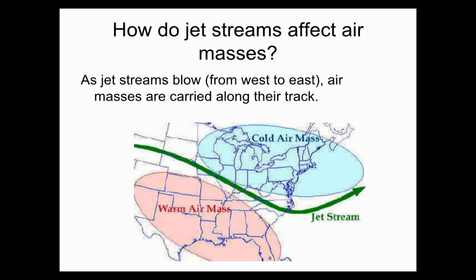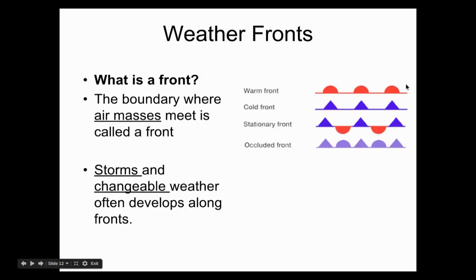Our jet stream affects how air masses move. Jet streams are actually like a river of high-speed wind, very high in the troposphere. They have a huge influence on climate and affect our weather patterns, sitting at about seven miles in altitude. As jet streams blow from the west to the east, they carry the air masses along their track. We're going to move in and take a look at some of these fronts.